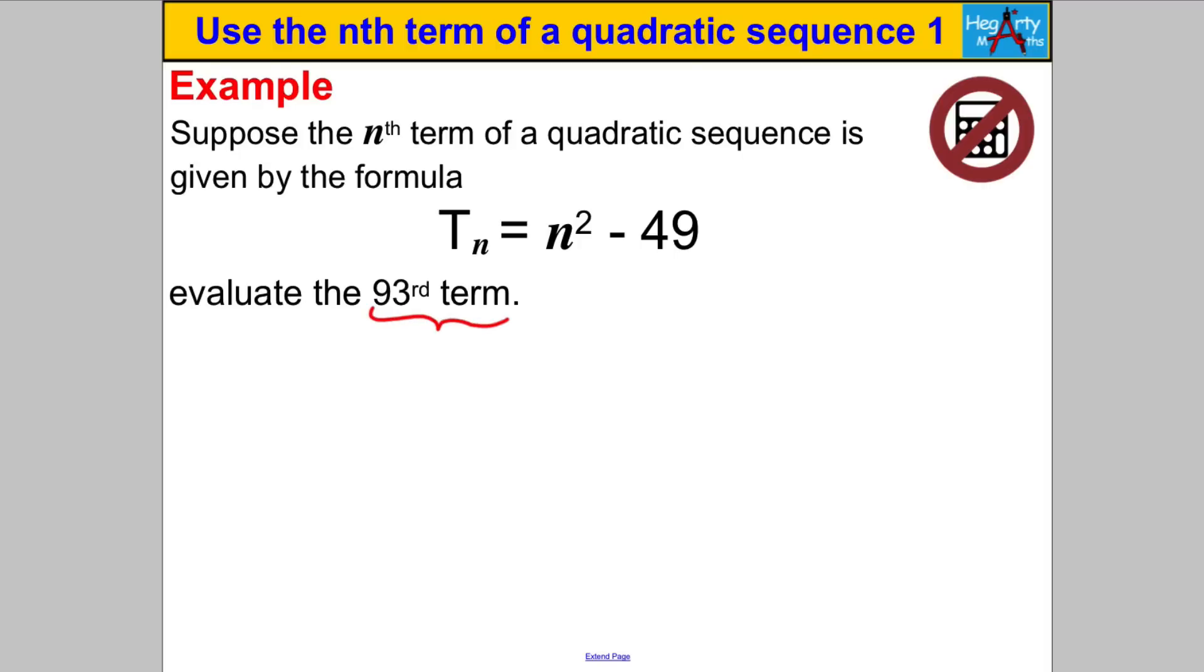So again we're asked here to work out the 93rd term of this sequence, this looks difficult. So on the one hand this is what you may do to start with, you may say right let n be 93 and we have to work at T_93 which is clearly going to be 93 squared subtract 49. Now on the one hand you could go off and work out 93 squared which is 93 multiplied by 93 and then you could take away 49 from it but there's a cleverer way I wonder if you can see it. Well remember this is still 93 squared but you could write 49, 49 is a square number you could write it as 7 squared.